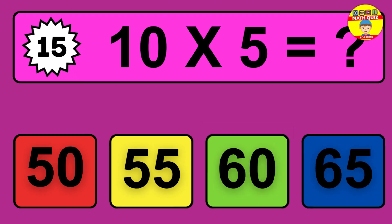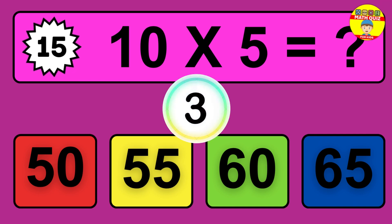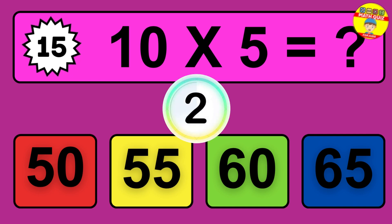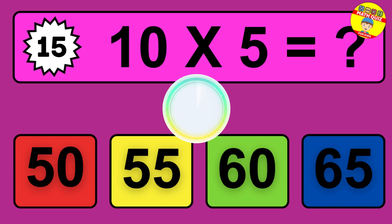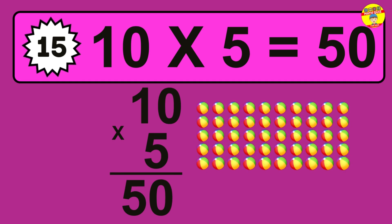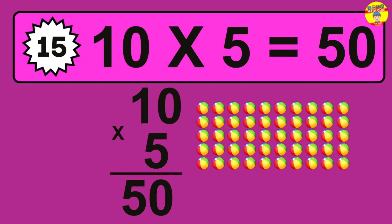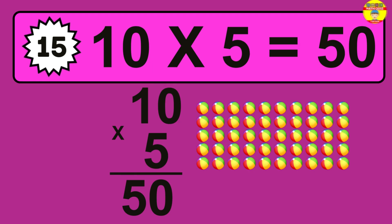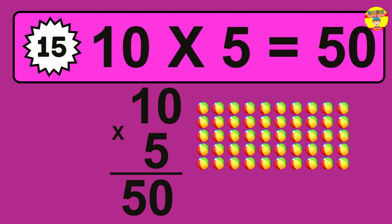Question fifteen: 10 times 5 equals what? The answer is 10 times 5 is 50. To calculate, we have 10 groups with 5 balls each. So how many balls do we have? 50 balls.